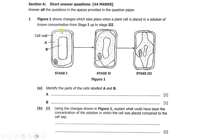This is the plant cell in stage one, this is the same plant cell in stage two, and this is the same plant cell in stage three. Part (a) asks us to identify the parts of the cells labeled A and B. The part labeled A is the cytoplasm, and the part labeled B is the vacuole.